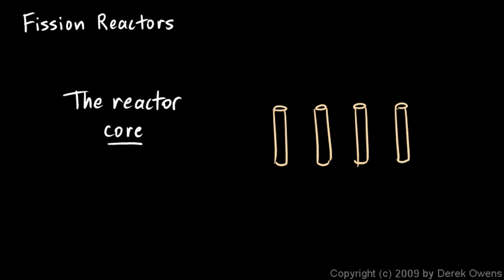But uranium, remember, is radioactive. Uranium will decay and emit radiation and some of that radiation is in the form of neutrons. And if those neutrons hit other uranium atoms they will cause those to decay more quickly than they otherwise would have.